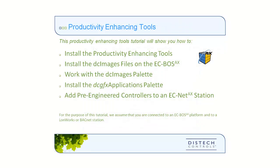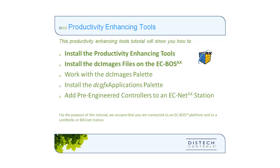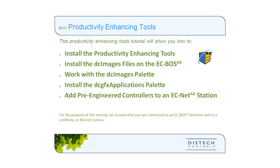This Productivity Enhancing Tools video tutorial will show you how to install the Productivity Enhancing Tools, install the DC Images files on the ECBOSS, work with the DC Images palette, install the DC GFX Applications palette, and add pre-engineered controllers to an ECNet-AX station. For the purpose of this tutorial, we assume that you are connected to an ECBOSS-AX platform and to a LONWORKS or BACnet station.